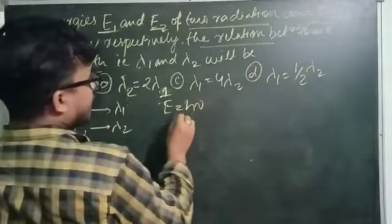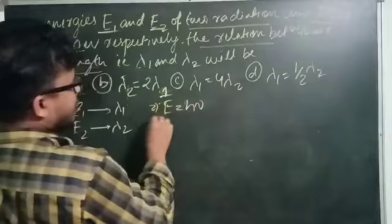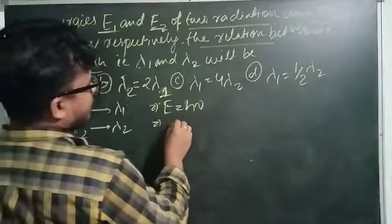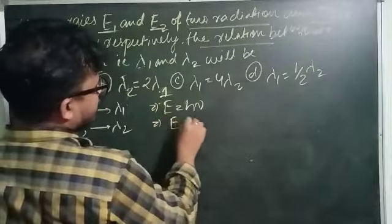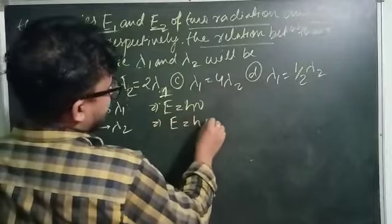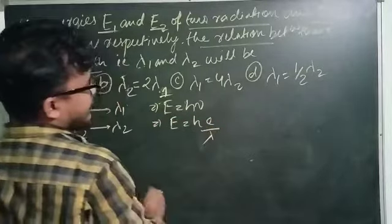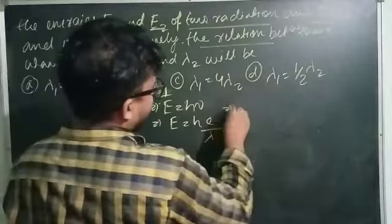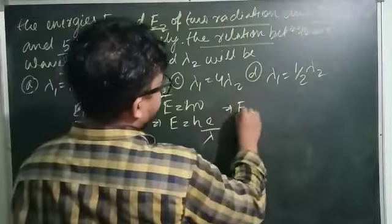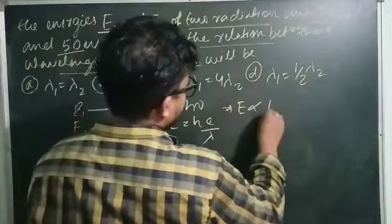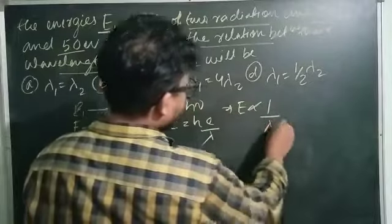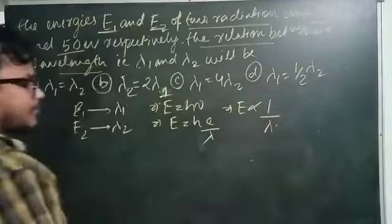E is equal to H nu — this is the photoelectric equation. We get E is equal to Hc by lambda. So from this relation, E is inversely proportional to lambda.